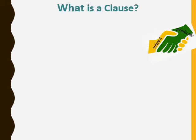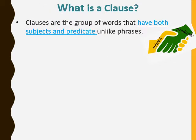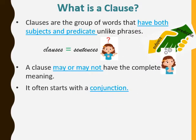Let's find out what clauses are. Clauses are a group of words that have both a subject and a predicate, unlike phrases. So does that mean clauses are equal to sentences? Let's find out. A clause may or may not have a complete meaning, whereas a sentence always has a complete meaning.